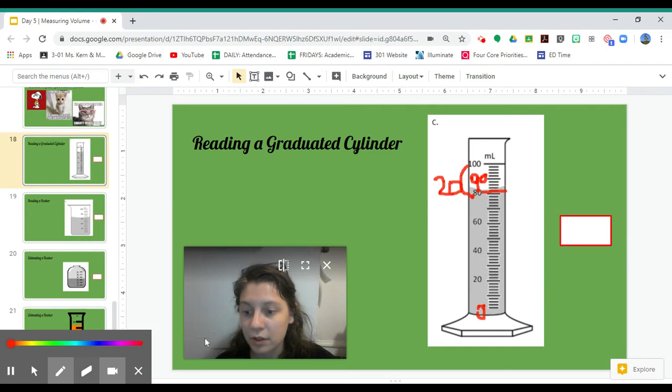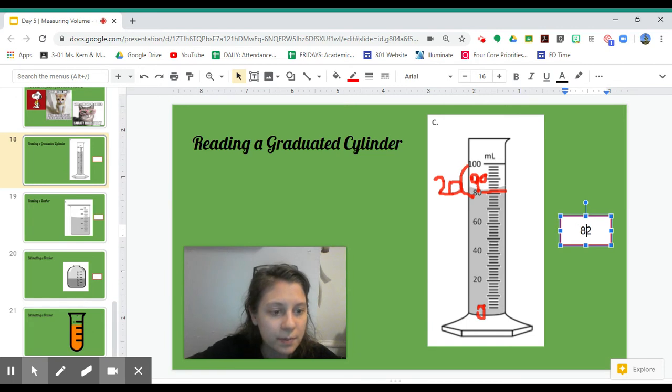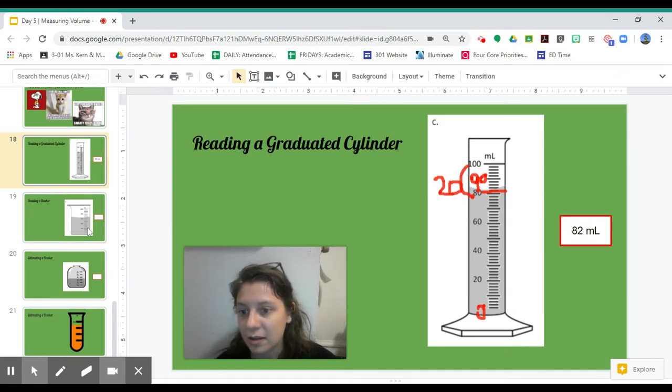I'm going to come over to my box and type in 82. Here we go, 82. And I can't forget my units because we're measuring here, and it's really important that we have what units we're measuring in. So there is our graduated cylinder example.